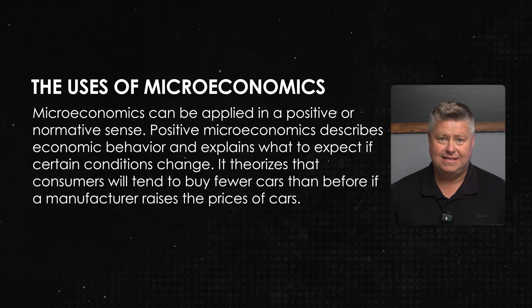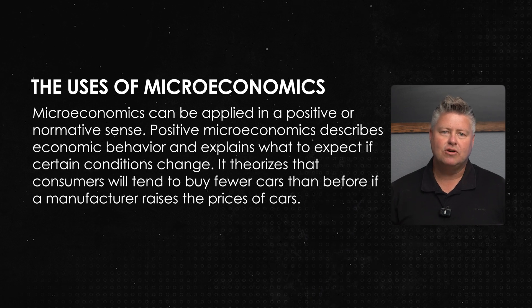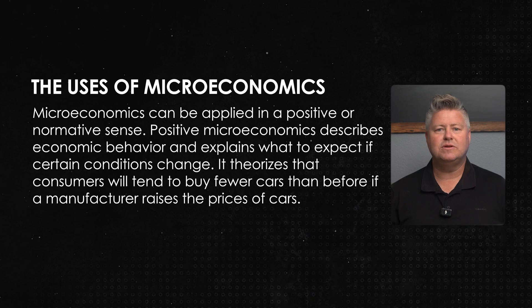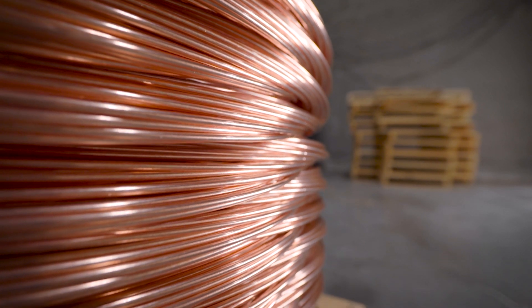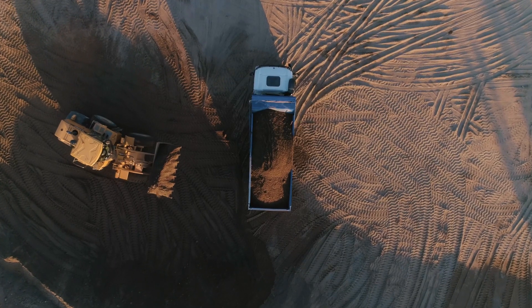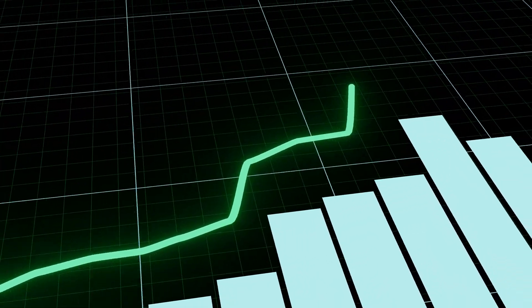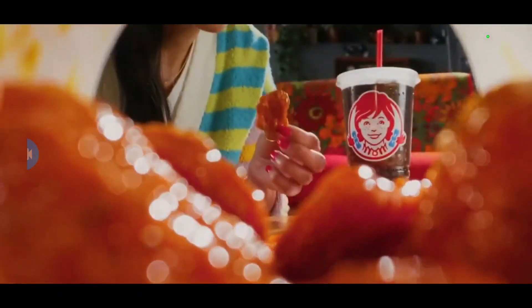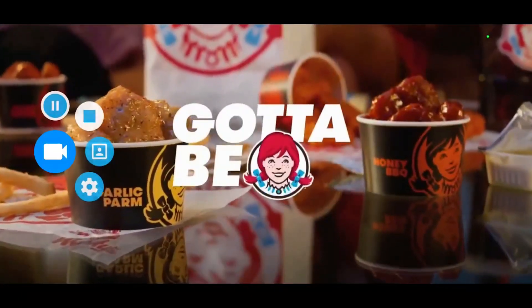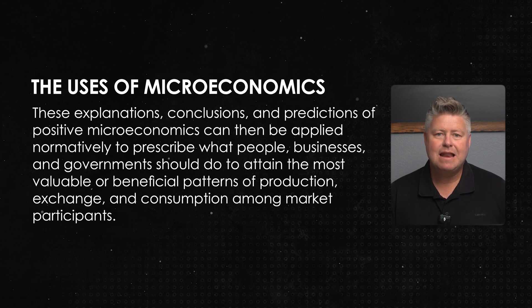Now let's talk about the uses for microeconomics. These can be applied in a positive or normative sense. Positive microeconomics describes economic behavior and explains what to expect if certain conditions change. It theorizes that consumers will tend to buy fewer cars if a manufacturer raises prices. The price of copper will tend to increase if a major copper mine collapses in South America because supply is now restricted. Positive microeconomics could help an investor see why Apple stock prices may fall if consumers buy fewer iPhones. It could also explain why a higher minimum wage might force the Wendy's company to hire fewer workers. These explanations, conclusions, and predictions of positive microeconomics can then be applied normatively.